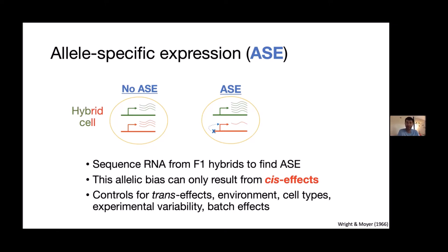We can map out all the ASE from the entire genome just by sequencing RNA from an F1 hybrid. Crucially, this type of allelic bias can only result from cis-acting effects — it cannot result from trans-acting effects because a trans-acting effect would affect both alleles equally. Both alleles are in the same nucleus, exposed to the same transcription factors and chromatin factors. So any trans differences between species will not be reflected in ASE; ASE is purely a readout of cis-acting effects.